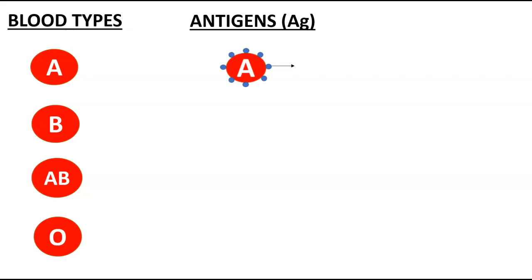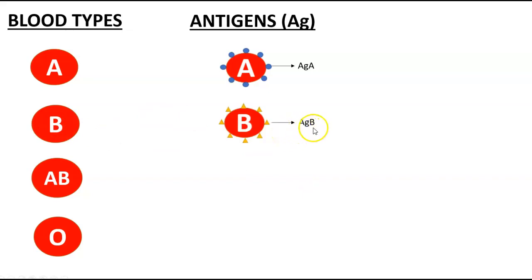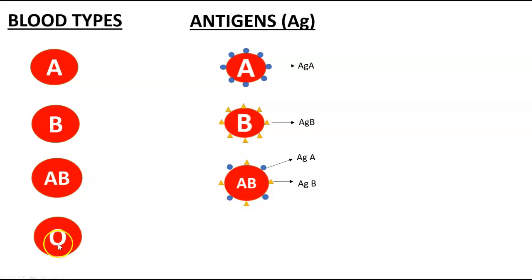Blood type A has antigen A on the surface — those are the surface antigens — giving rise to the name A blood type. B blood type would have B antigens on the surface, giving its name. AB blood type would have antigen A and antigen B, both antigens, and hence the name AB. And O is unique because it's almost like the number zero — they have no antigens.